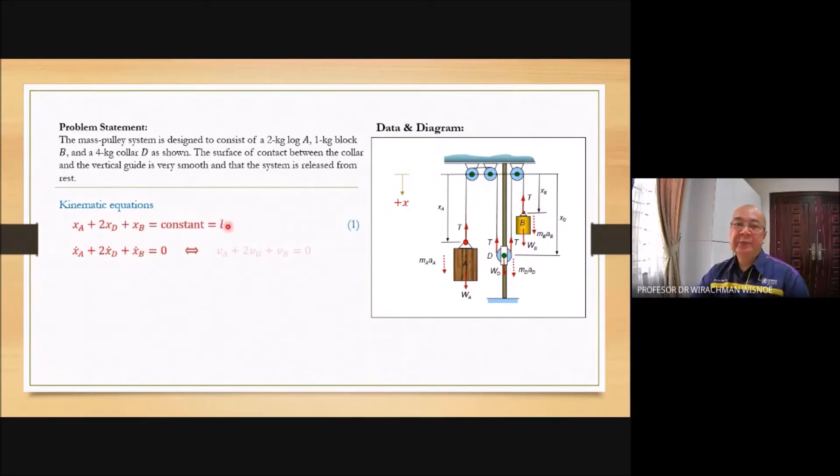You derive this one differential with respect to time. You have XA dot plus 2XD dot plus XB dot equals zero. So you know that X dot means the rate of X. The rate of X means dx over dt. dx over dt is velocity. So what you write here is equivalent with this one. VA plus 2VD plus VB equal to zero. Why zero? Because constant, if you differentiate with respect to time, it will be zero.